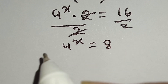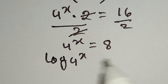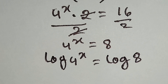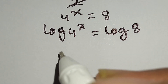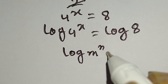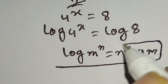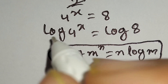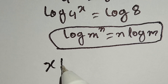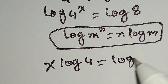Now we will take the log of both sides, so we can write log of 4 to the power x is equal to log 8. We know that log m to the power n is equal to n log m. According to this formula, we can write this as x log 4 is equal to log 8.